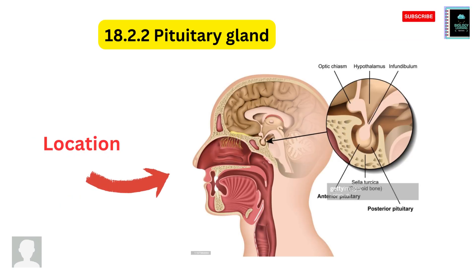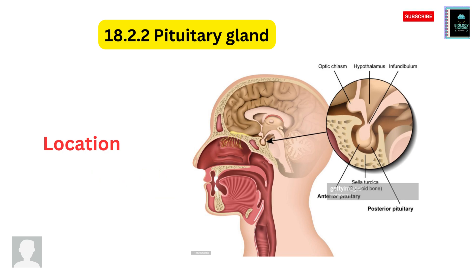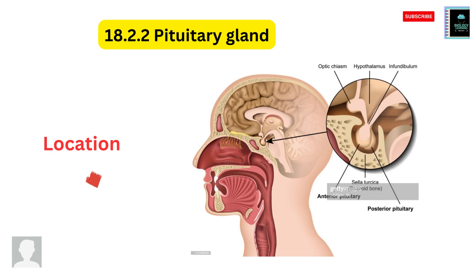First, let us talk about the pituitary gland. Regarding the location of the pituitary gland, it is situated just below the hypothalamus. It is attached to the hypothalamus. The pituitary gland has three lobes: the anterior lobe, the posterior lobe, and the median lobe.